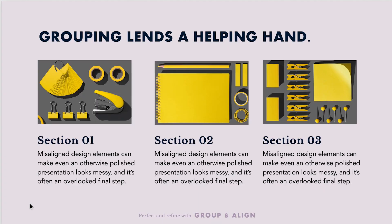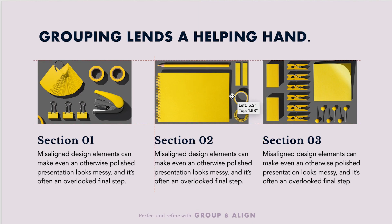Both the Align tool and Smart Guides are really handy when it comes to individual elements, but also grouped elements or rows or columns of elements that you want evenly spaced across your page. Here we have three columns of information already aligned on the left edge how I want them to be, but I can see that the center column right now isn't perfectly placed between the other two. If I start selecting each element to center it, I'm going to have to realign everything all over again for that column.